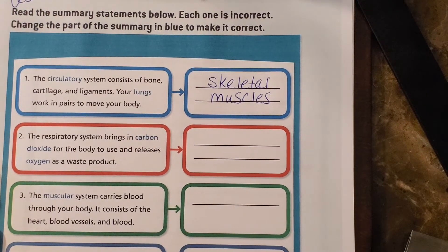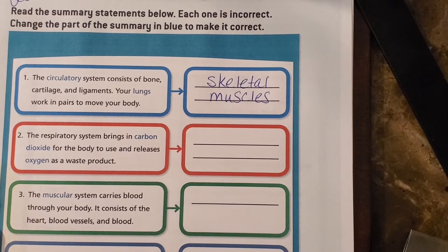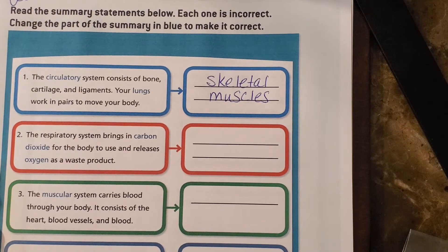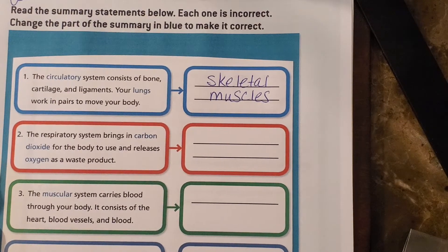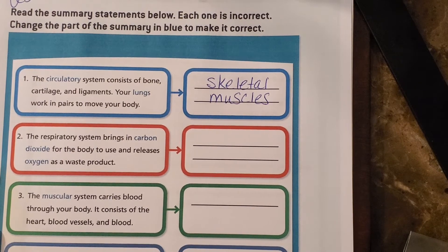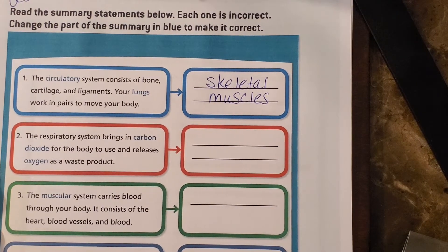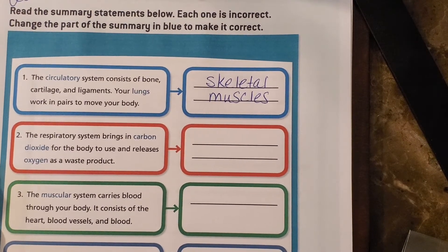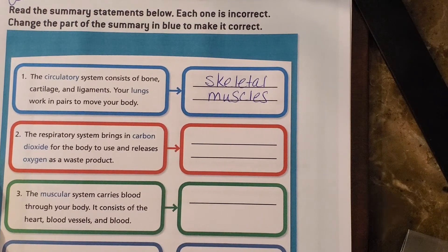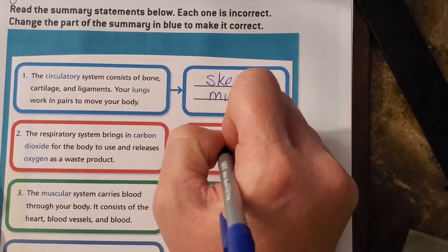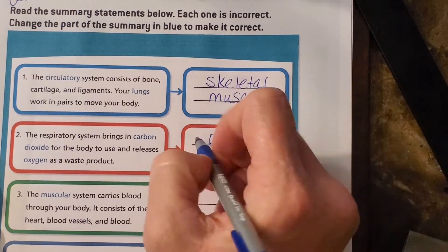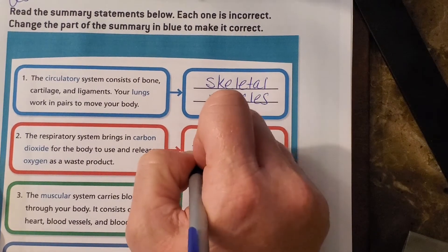Number two: the respiratory system brings in carbon dioxide for the body to use and releases oxygen as a waste product. Well, no. The respiratory system brings in oxygen for the body to use and releases carbon dioxide as a waste product. So you're going to write 'oxygen' on the top and 'carbon dioxide' on the bottom.